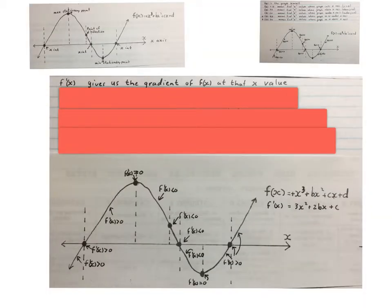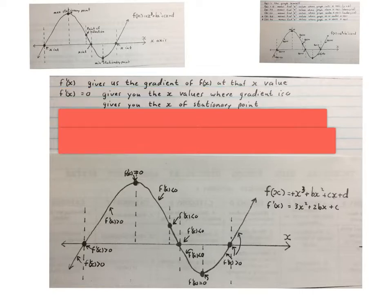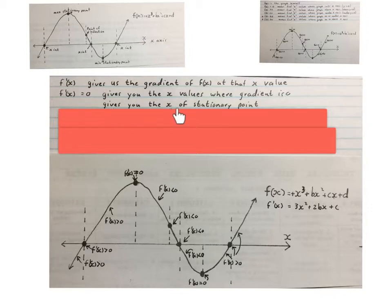The next notation we're going to look at is f'(x). That gives us the gradient of the original graph at that x value. So f'(x) equals zero gives us the x values where the gradient is zero — that's at our stationary points. It gives us the x values of the stationary points, over there and over there, where f'(x) is equal to zero.